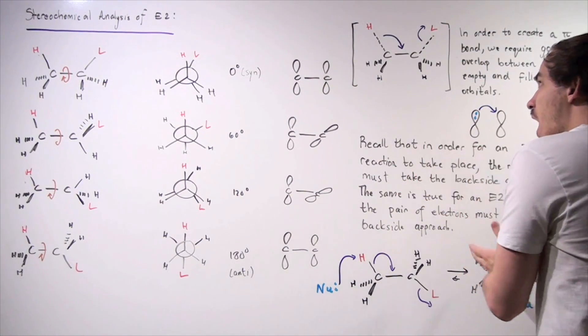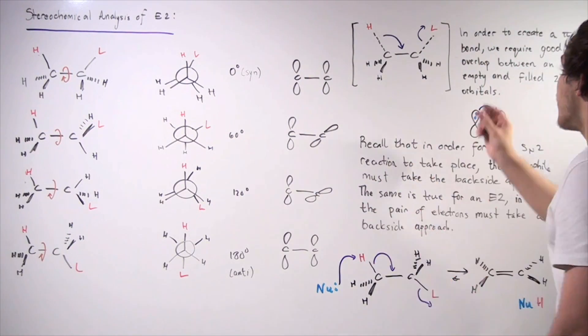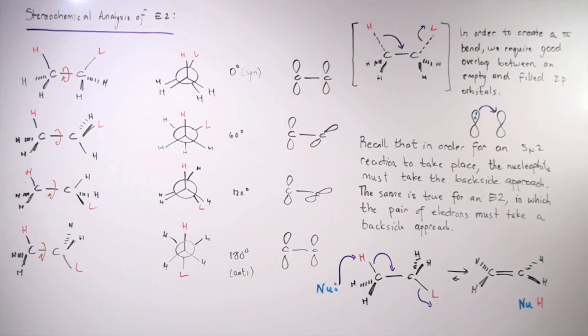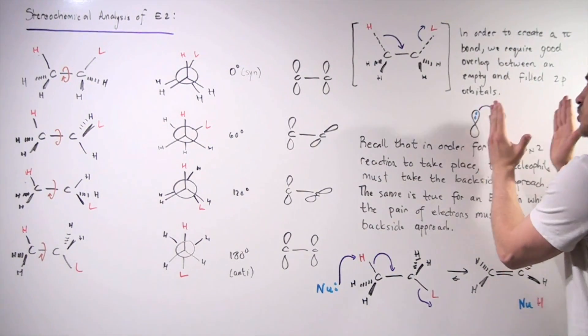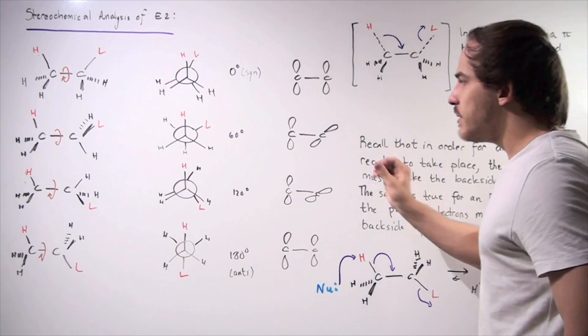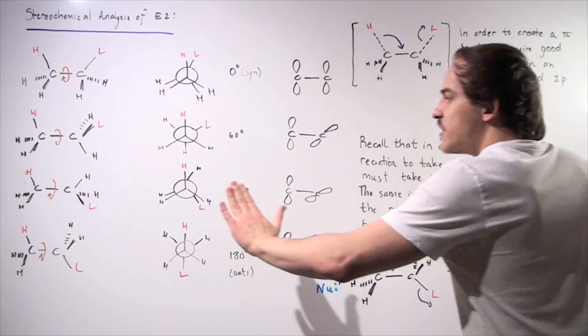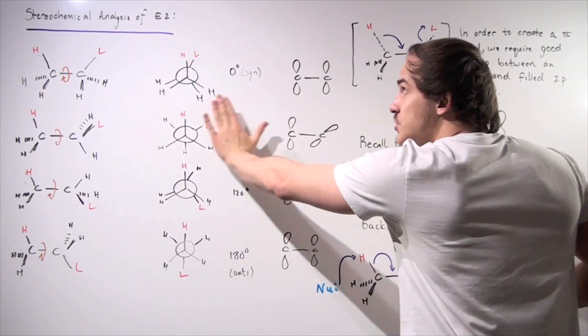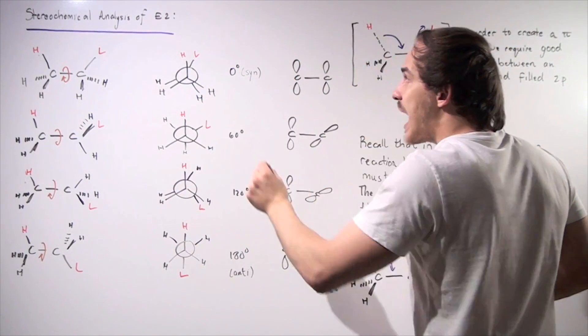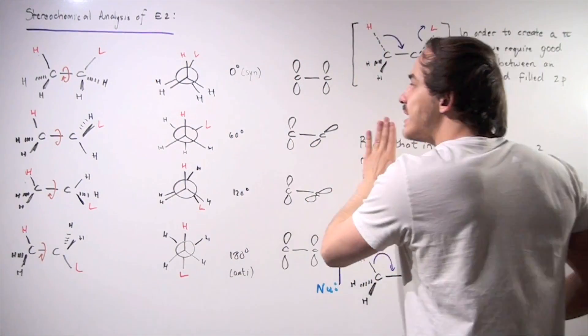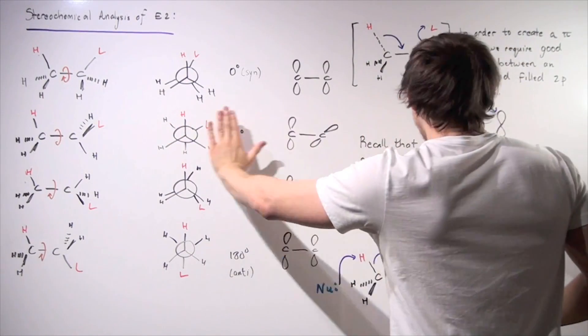Recall what we require for a pi bond to form. In order to create a pi bond, we require good overlap between an empty and a filled 2p orbital. So for example, we have the following filled 2p orbital and an empty 2p orbital, and they must be aligned exactly parallel to one another. Notice in the 60 and 120 degrees, they're not parallel. So that means this is not the proper orientation, conformation of our E2 reaction. In other words, our E2 reaction will not take place when our molecule is in either of these two conformations.